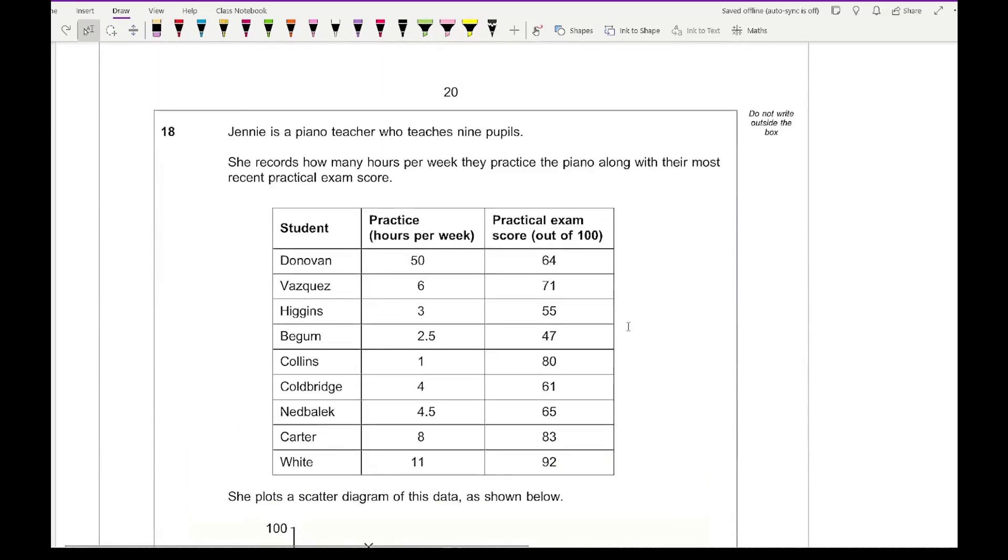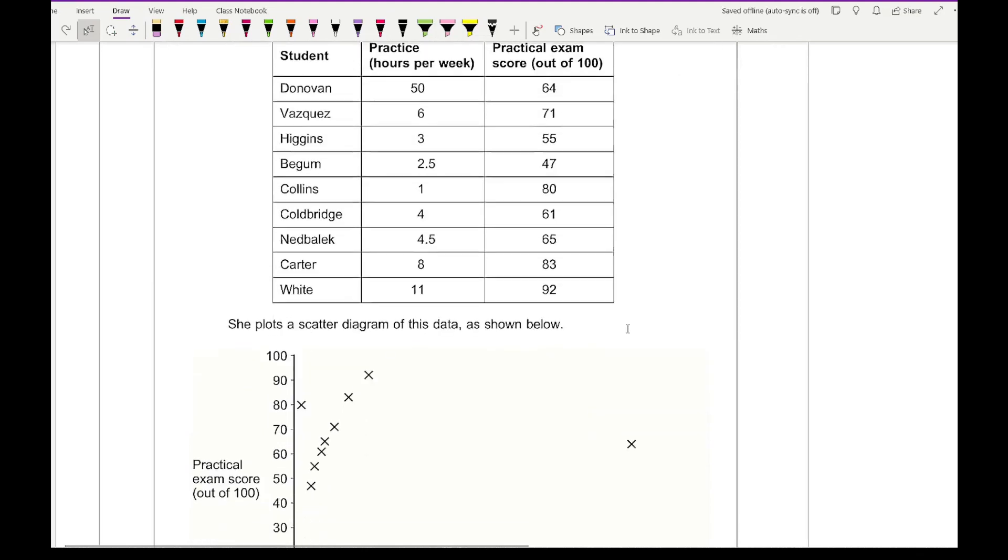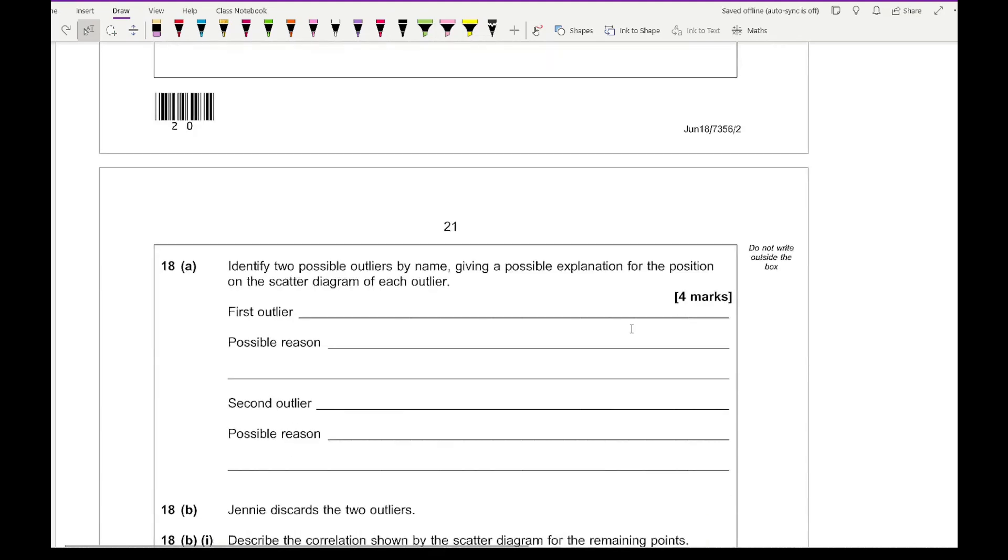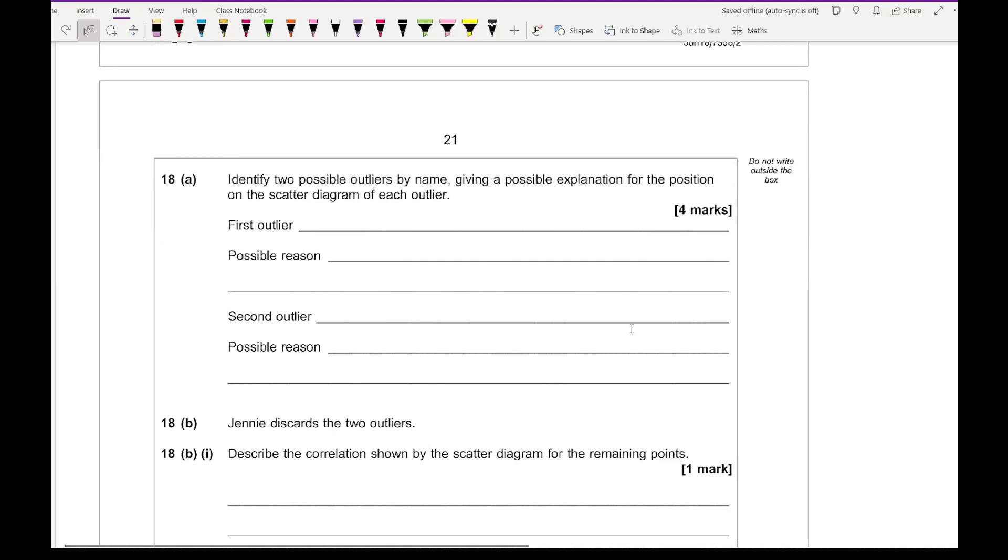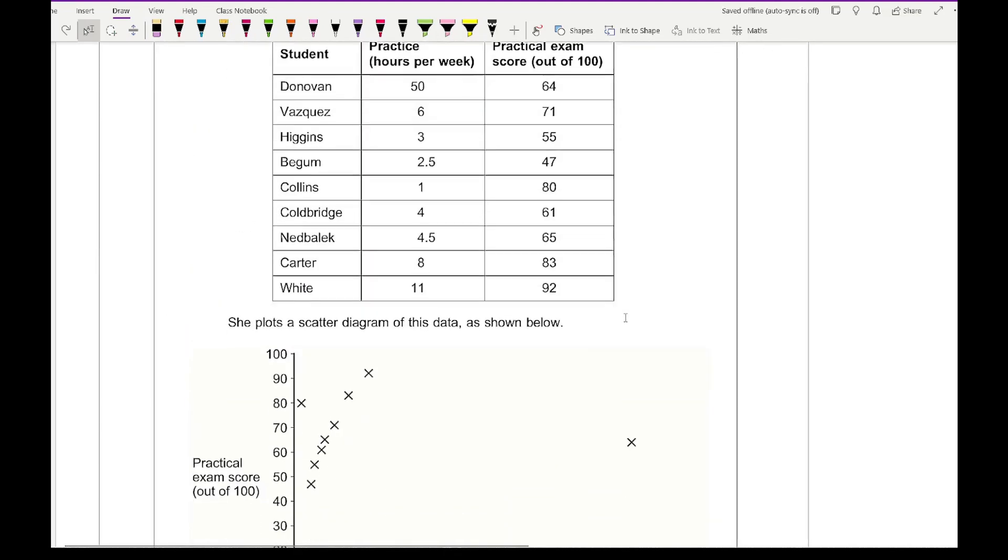Moving on to question 18, Jenny is a piano teacher who teaches nine pupils. She records how many hours per week they practice the piano along with their most recent practical exam score. She plots the scatter diagram of this data as shown below. The first question asks us to identify two possible outliers by name, giving possible explanations for the position on their scatter diagram for each outlier. Looking at the data, the two outliers are going to be this one here and this one here. This one is Collins and this one here is Donovan.